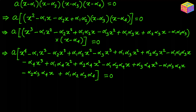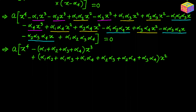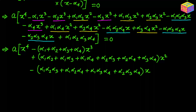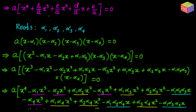Now let's try to group the like terms together. We write the x to the power 4 term as is — there is only one of them. Then we group the x cubed terms — we have four of them. Then the x squared terms — we have six of them. Then the x terms — we have four of those. Finally we have the constant term which is alpha sub 1 times alpha sub 2 times alpha sub 3 times alpha sub 4. Next we compare these coefficients with the original form.